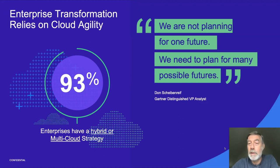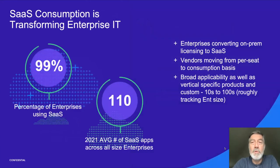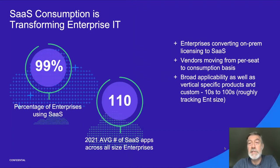You can see the quote from a Gartner analyst on the right: when planning our network architectures in the future, we're not planning on one future — we need to plan for multiple possible futures. Accommodating the move to using the cloud to transform the enterprise was a move to use software as a service, essentially changing the way that enterprises consumed applications and transforming enterprise IT.